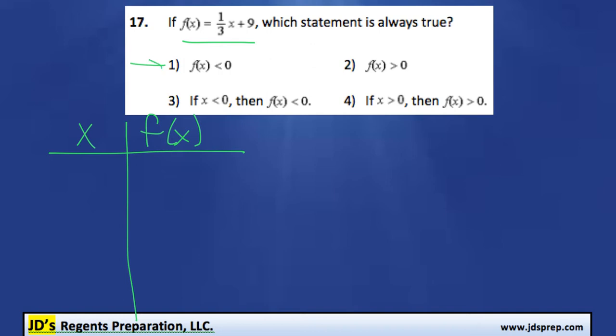The first option says that f(x) < 0, meaning f(x) is always negative. We can quickly disprove that by giving an x value of 0. f(x) would be 1/3 times 0 plus 9, which is just 9. That's not negative, so that's clearly false.